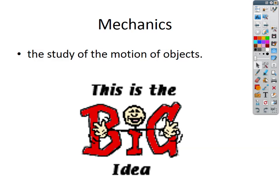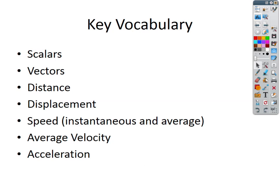This is an entire year course. In college, mechanical physics is an entire semester course. So there's going to be a lot of vocabulary in this section — a lot of things we need to start understanding and using. A lot of these words you might have heard of before, but a lot of people don't use them completely correctly. We've got scalars and vectors, distance, displacement, speed — where we'll talk about instantaneous and average — average velocity, and then acceleration.